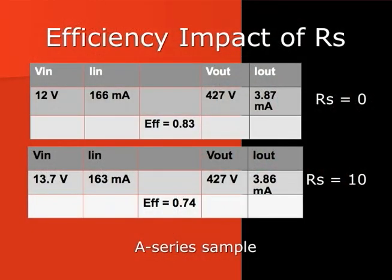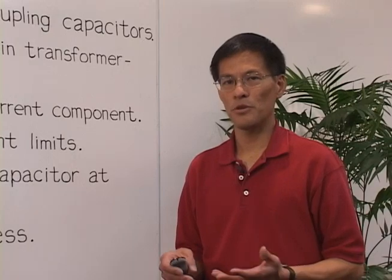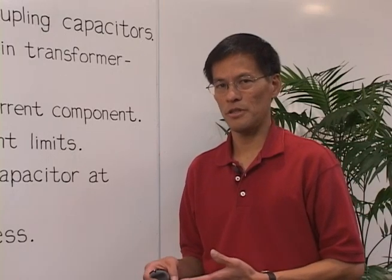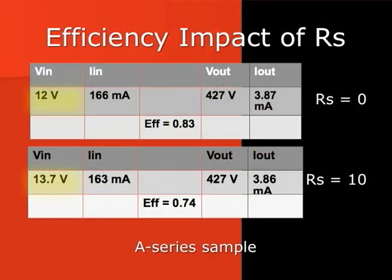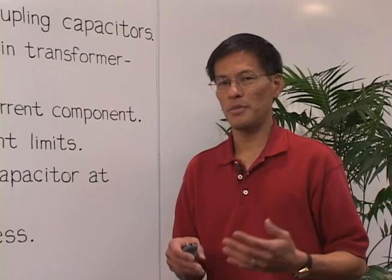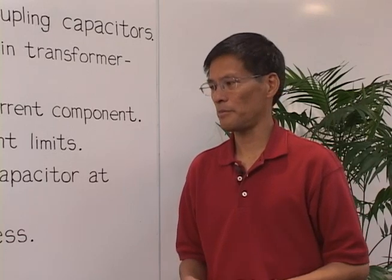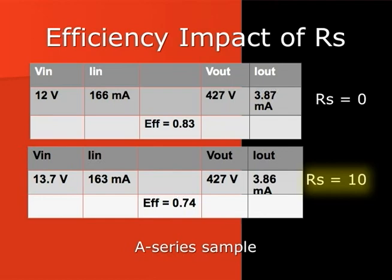The first thing to note is that because of the source resistance, there's an efficiency impact on the converter operation. The data shows that for the same output voltage and power delivered, we are supplying a lot more voltage from the source to do that. That may be obvious because after all, you are actually dissipating power in the source resistance. With the same sample with a source resistance of 10 ohms, we lose about 10 to 15 percent in efficiency.